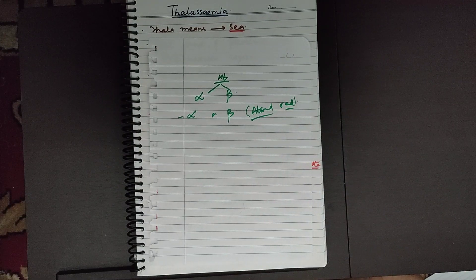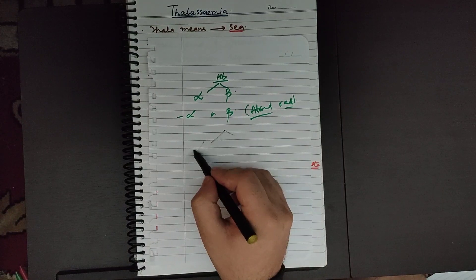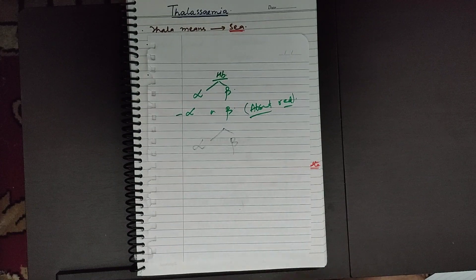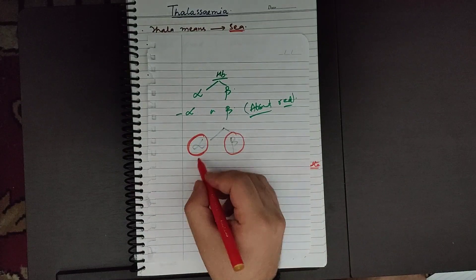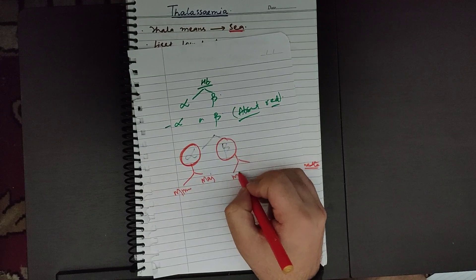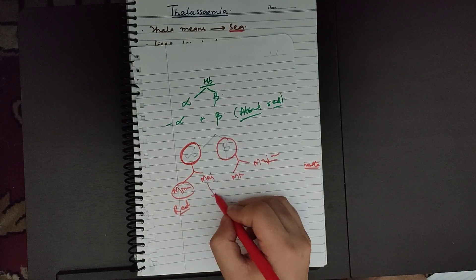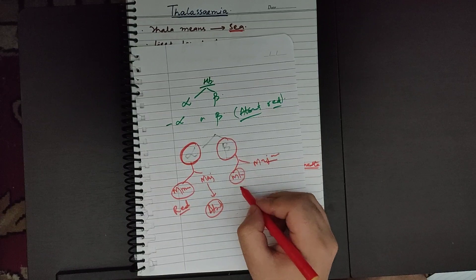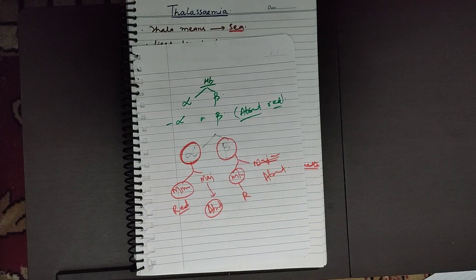Either alpha chains or beta chains will be absent or reduced. Accordingly, we can have two kinds of disorders: alpha thalassemia and beta thalassemia. Alpha thalassemia is when the disorder is related to alpha chains, and beta thalassemia is when the disorder is related to beta chains. Alpha can be alpha minor and alpha major; beta can be beta minor and beta major.